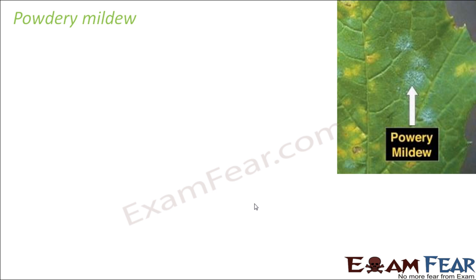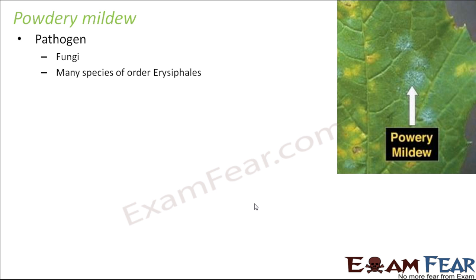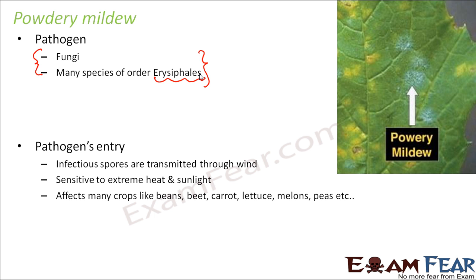Powdery mildew is named due to the appearance of powder-like structures on the plant. The pathogens involved are many species of fungi belonging to the order Erysiphales. The pathogen enters through infectious spores transmitted by wind. It is extremely sensitive to heat and light — plants exposed to sunlight for a long time show reduced infection. It affects many crops like beans, beet, carrot, lettuce, melons, peas, and many others.